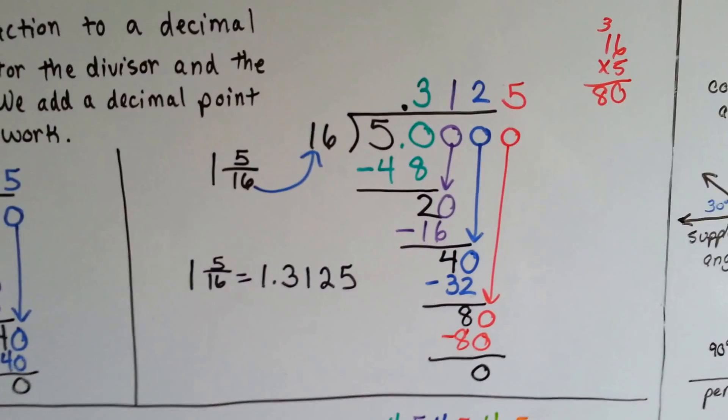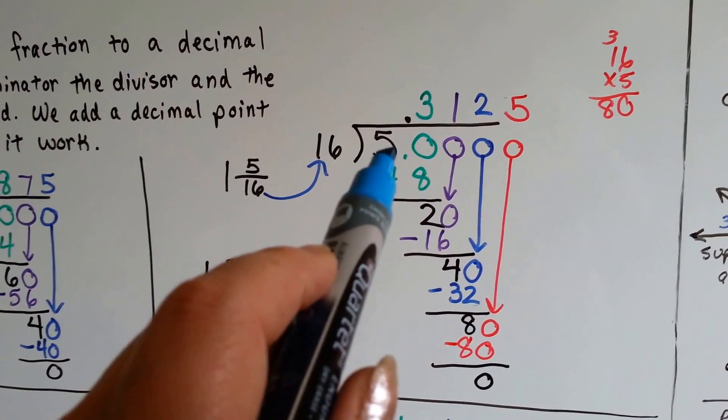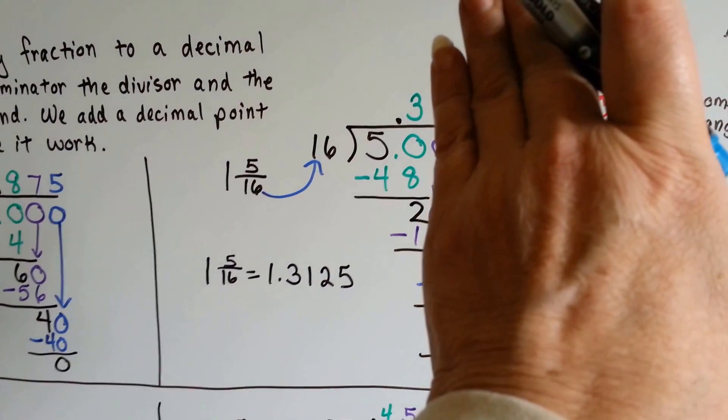1 and 5/16, we do the same thing. The 16 is the divisor. The 5 becomes the dividend. We add a decimal point and a 0.